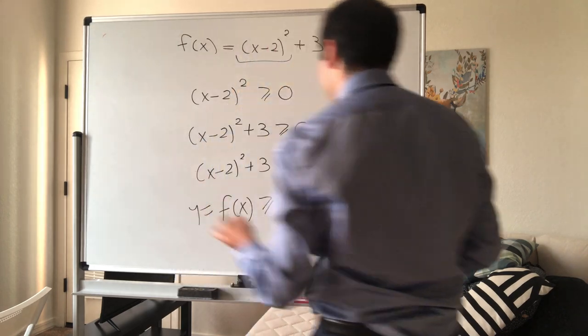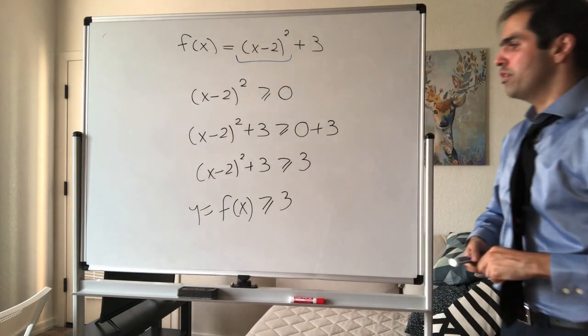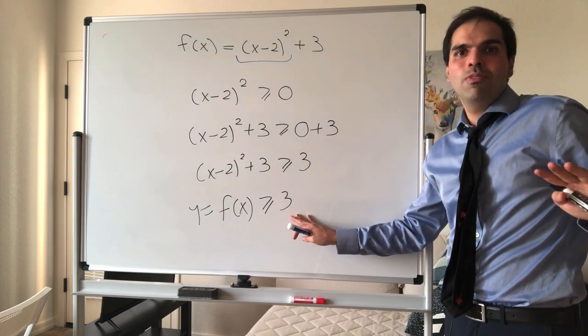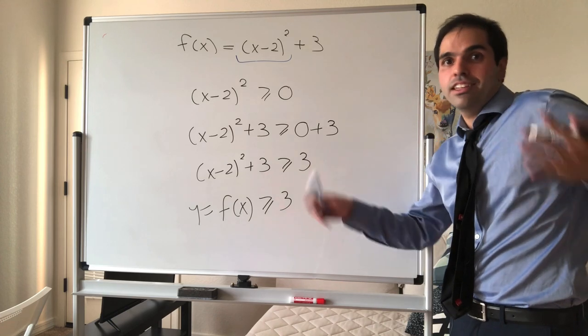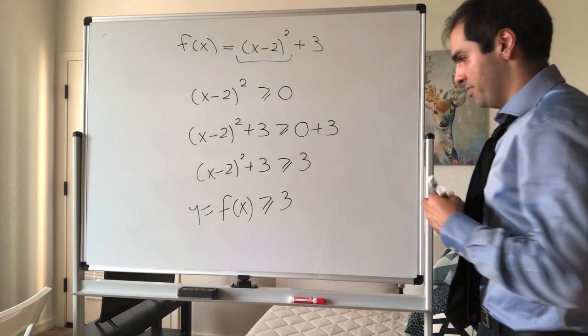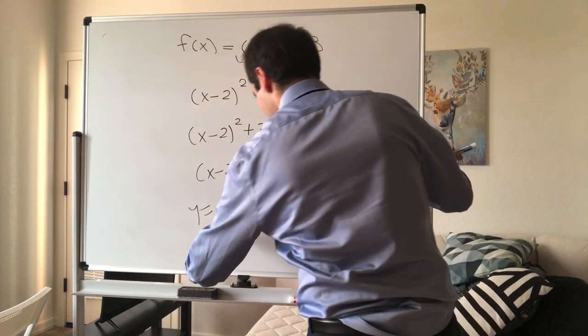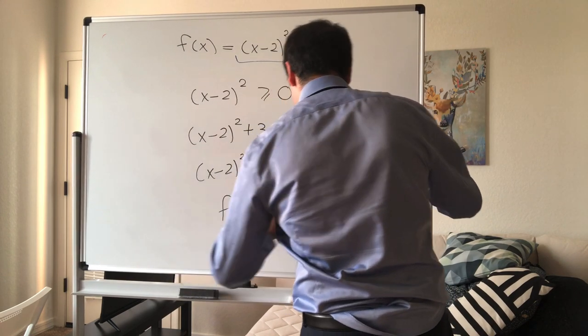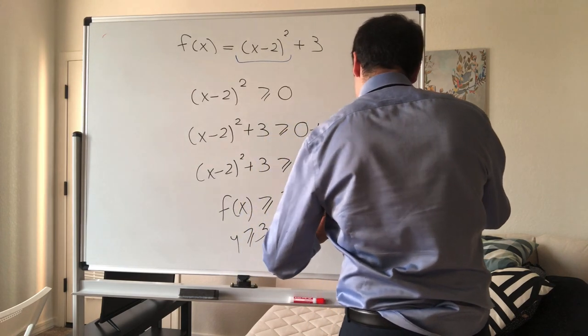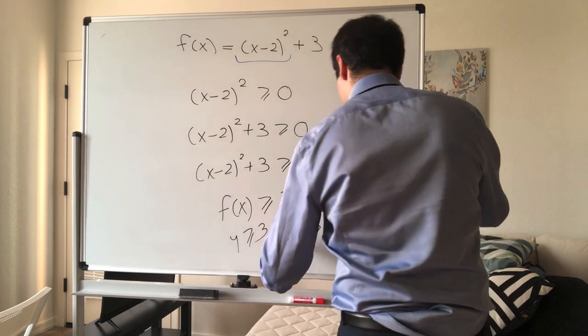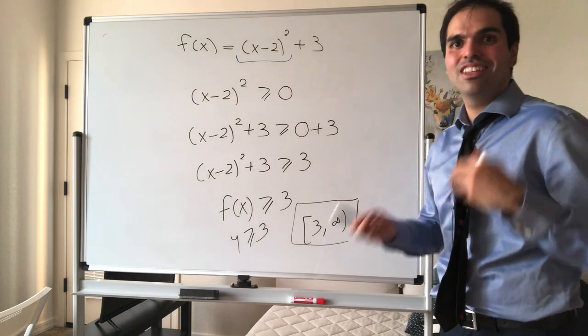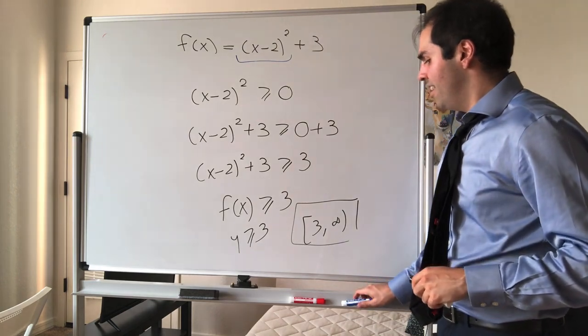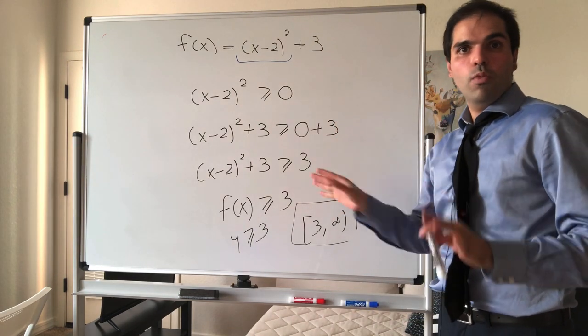So what this tells you is that f of x, so y, which is f of x, is greater or equal to 3. And it does not prove that the range is 3 comma infinity, but it at least suggests that it is. So in other words, the range is all the y values greater or equal to 3, so the range is 3 comma infinity. We don't really have the tools yet to show that the range is really all of it. We need inverse functions for that. All right, so that was the algebraic way.